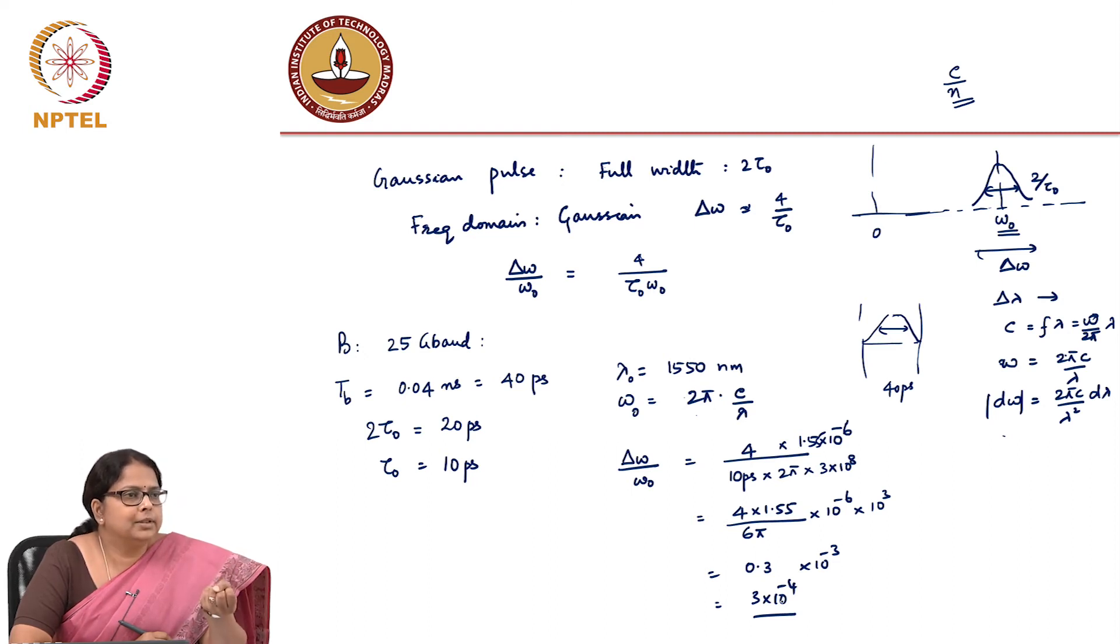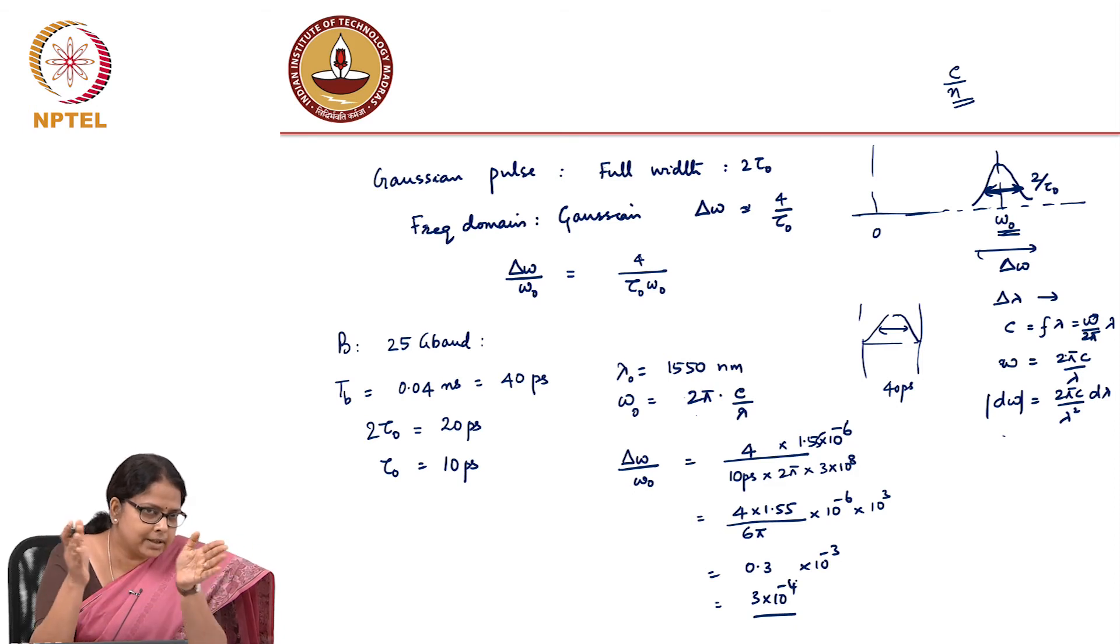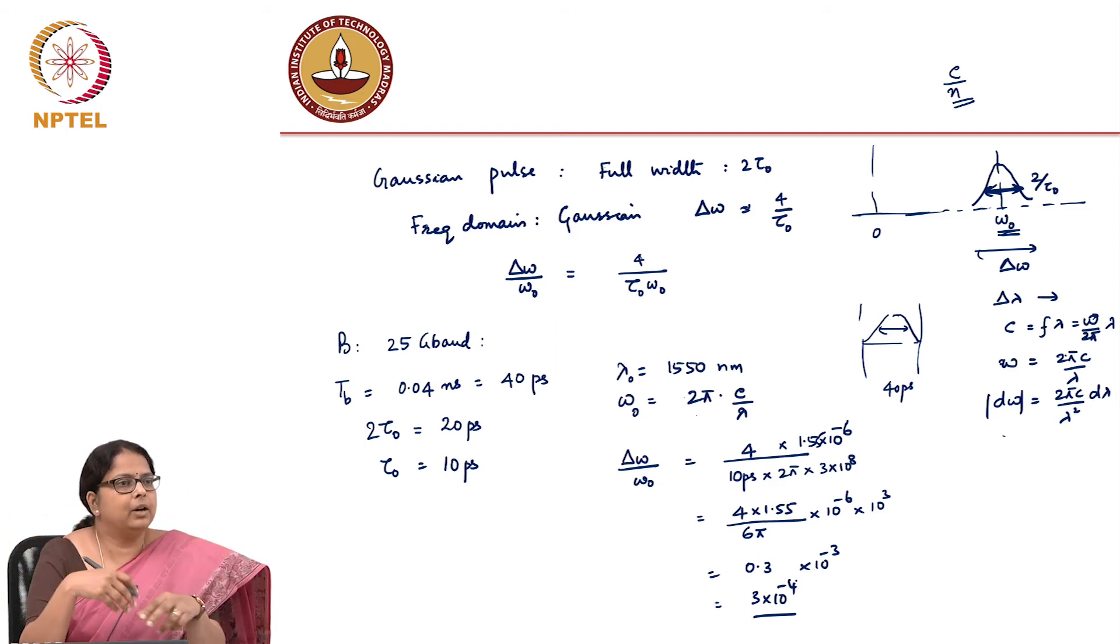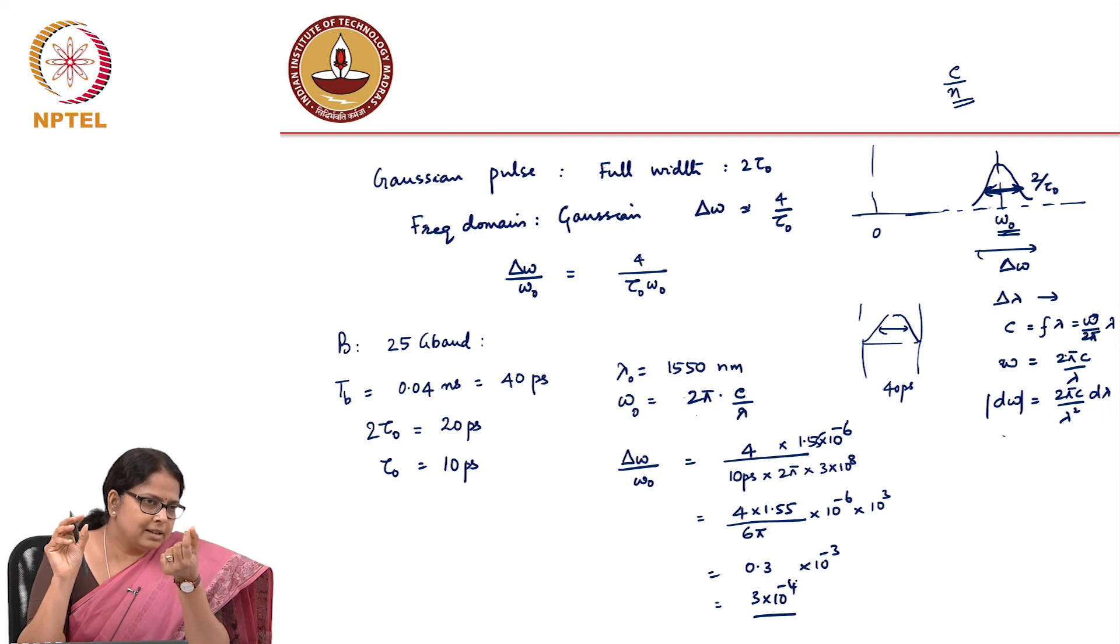So, what does this tell you? If I pulse at 25 gigabaud, the frequency spread that I have when compared to your carrier frequency is 10 power minus 4 times, meaning in the frequency domain you are still talking about an extremely narrow spectrum when compared to your center frequency, which means the n versus lambda, n as a function of lambda or n as a function of omega that you have to worry about is only at a very small spread with respect to your omega.